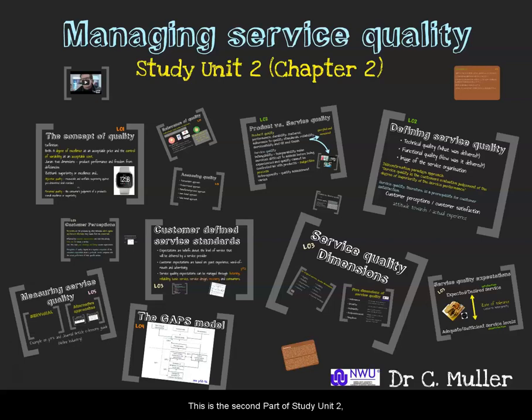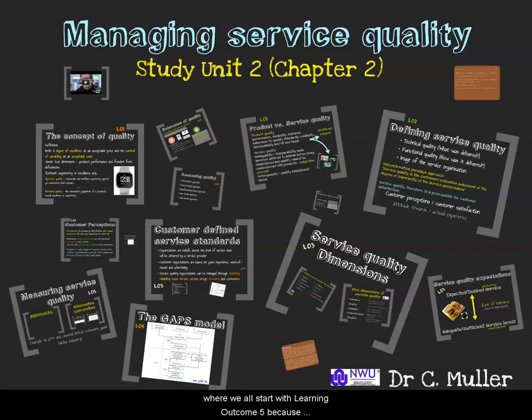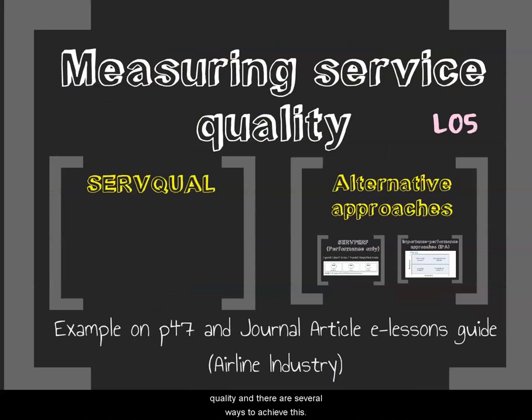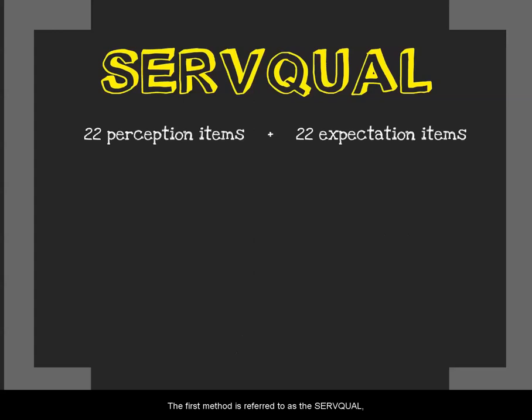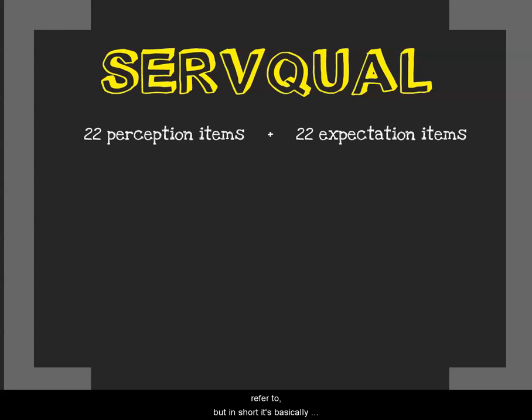This is the second part of Study Unit 2, Chapter 2 — managing service quality. We will now deal with Learning Outcomes 4 and 5, starting with Learning Outcome 5 first as it appears first in the textbook: measuring service quality. The first method is SERVQUAL — service quality — which comprises 22 perception items and 22 expectation items. These are basically items on a questionnaire that you have probably filled in before.